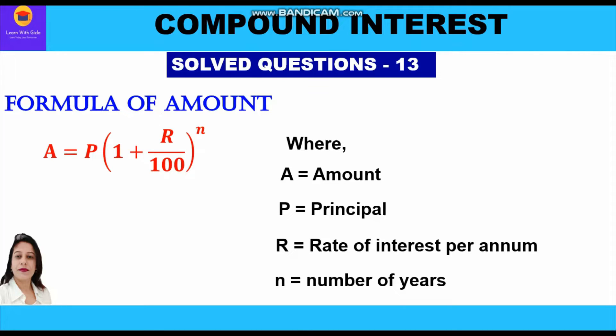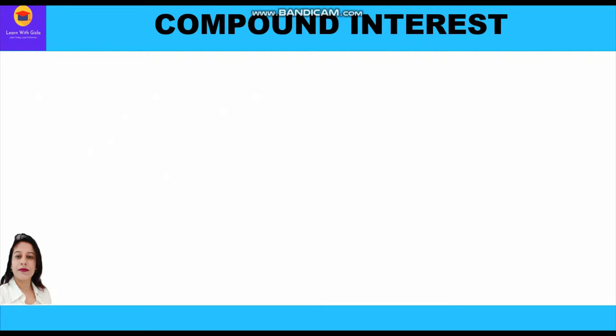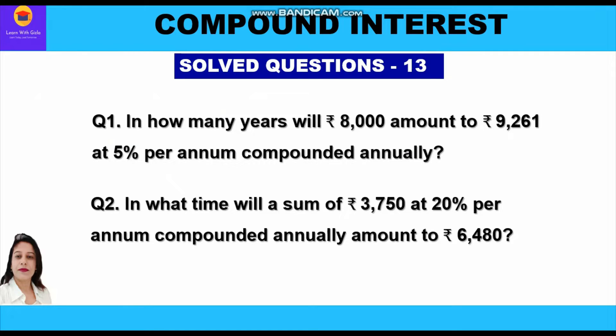Always remember there are four quantities in this formula: A, P, r, and n. The value of three quantities will always be given in any particular question and we need to find the value of the fourth quantity. We will take up two questions in which the principal, amount, and rate of interest per annum are given, and we need to find the number of years — that is, the time period.